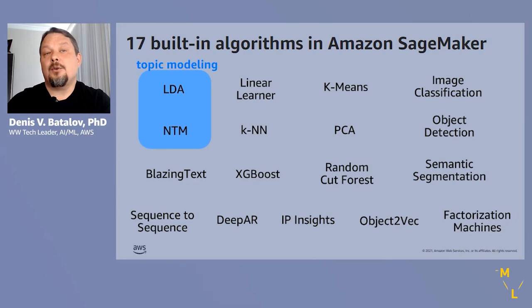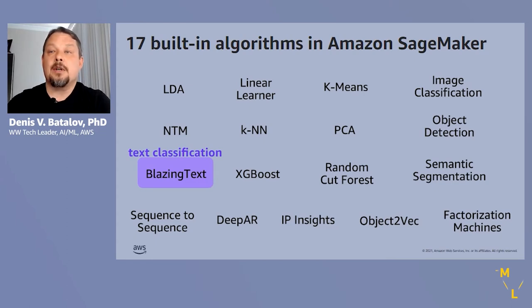Next two are about discovering topics in text documents or clustering documents together based on related content. Latent Dirichlet Allocation or LDA and Neural Topic Modeling or NTM are known techniques for this purpose. When it comes to classifying text documents, for example, as belonging to a particular genre or legal document type, Blazing Text is Amazon's algorithm for this purpose. It is also able to compute Word2Vec embeddings.